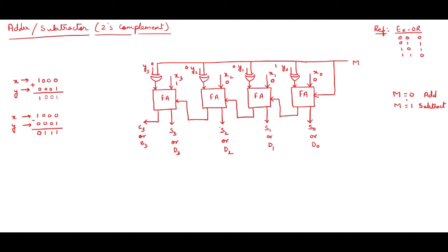Now I am putting m equals 0. When m equals 0, the XOR gate inputs are all 0. So 1 XOR 0 is 1, 0 XOR 0 is 0, 0 XOR 0 is 0, and 0 XOR 0 is 0. Now let us do the addition: 1 plus 0 plus 0 is 1, carry is 0. Then 0 plus 0 plus 0 is 0, carry is 0.